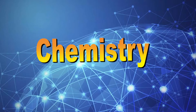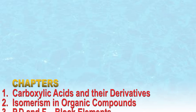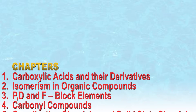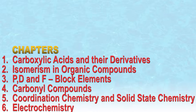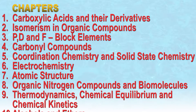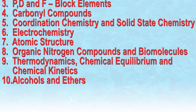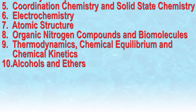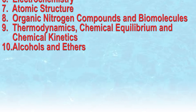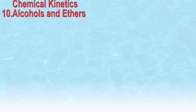Next up is Chemistry. It comprises of: carboxylic acids and their derivatives, isomerism in organic compounds, P, D and F block elements, carbonyl compounds, coordination chemistry and solid state chemistry, electrochemistry, atomic structure, organic nitrogen compounds and biomolecules, thermodynamics, chemical equilibrium and chemical kinetics, alcohols and ethers.